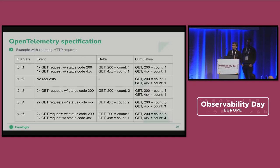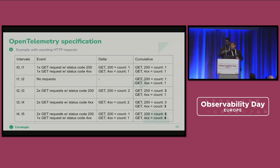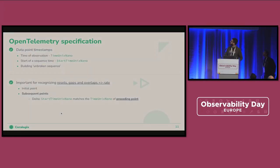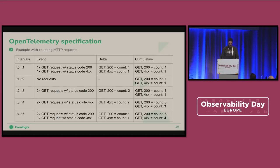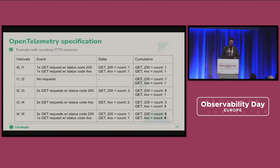I'll now hand over to my colleague Matej to continue the explanation with a more specific example. Thanks, Oded. Just to finish off with a more practical example — we have a pseudo representation of a series: how we would count HTTP requests differently with delta and cumulative.